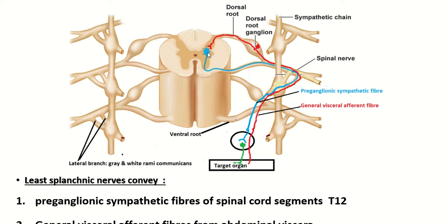The lateral horn contains the preganglionic sympathetic neuron. This preganglionic fiber leaves the spinal cord through the ventral root of the spinal nerve, then enters the spinal nerve. By using the white rami communicantes, it enters the corresponding sympathetic ganglion, where it synapses with the postganglionic neuron.